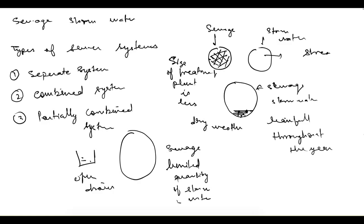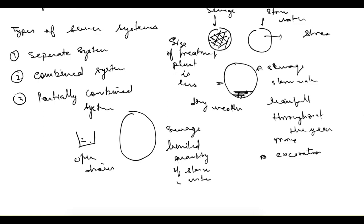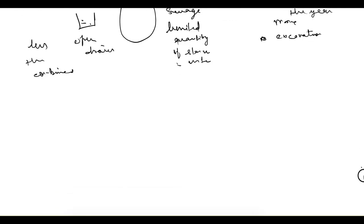Another limitation of the combined system is that the pipe diameter required is more, so more excavation is needed, making it unsuitable for congested areas. In a partially combined system, the pipe diameter is more than in the separate system but less than the combined system. All these factors have to be considered when choosing a system.